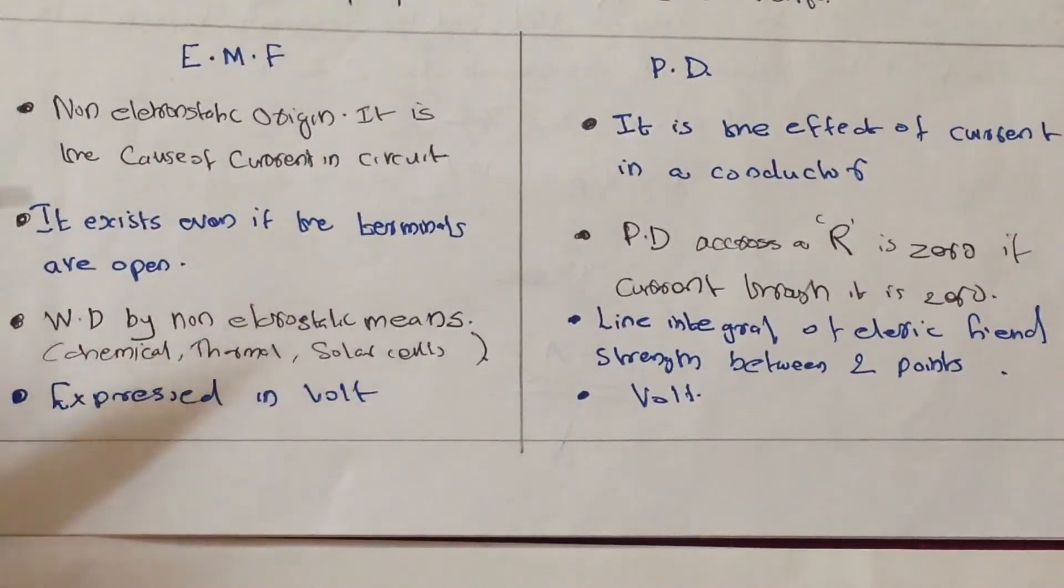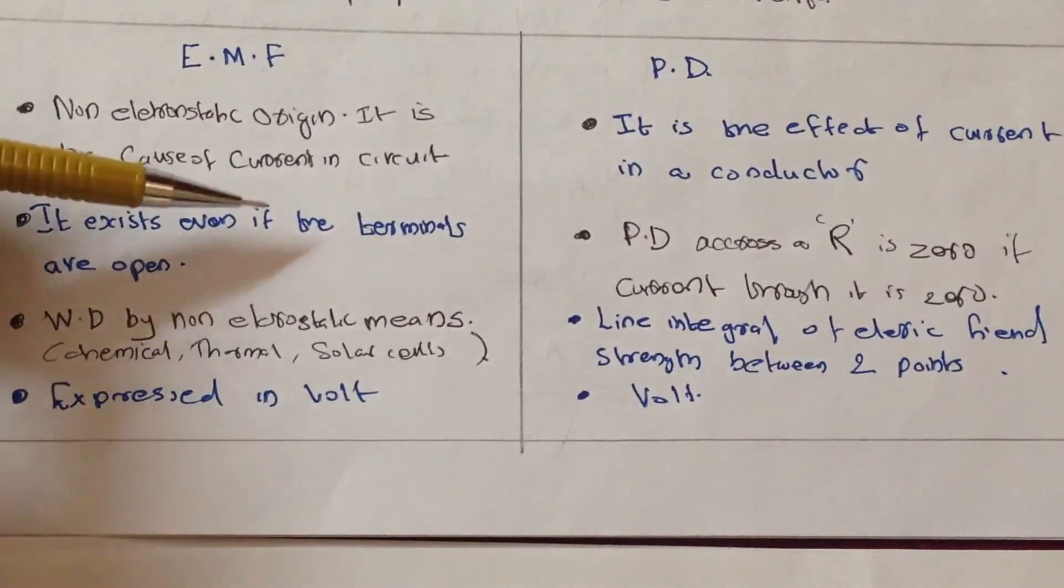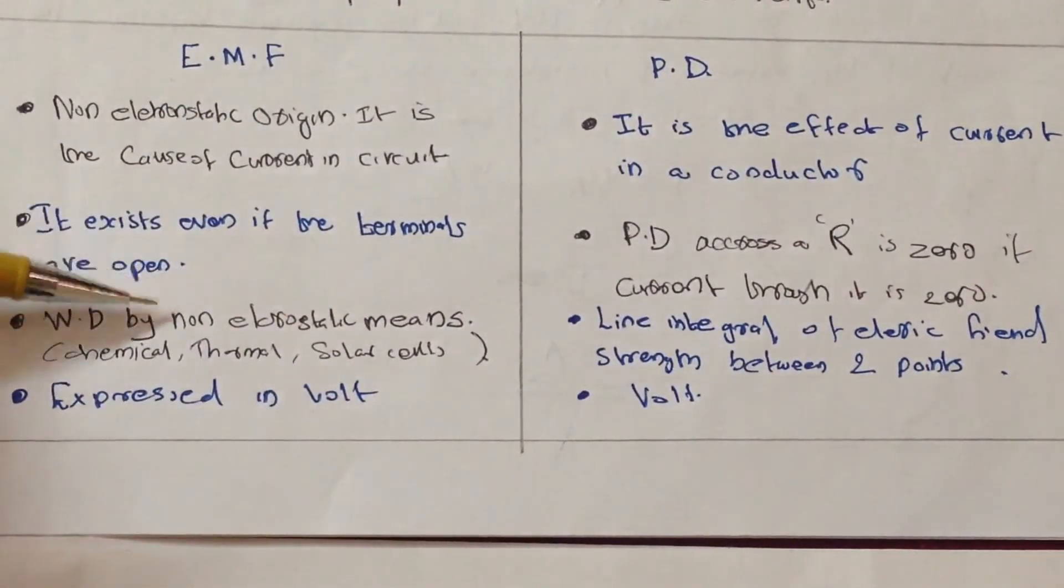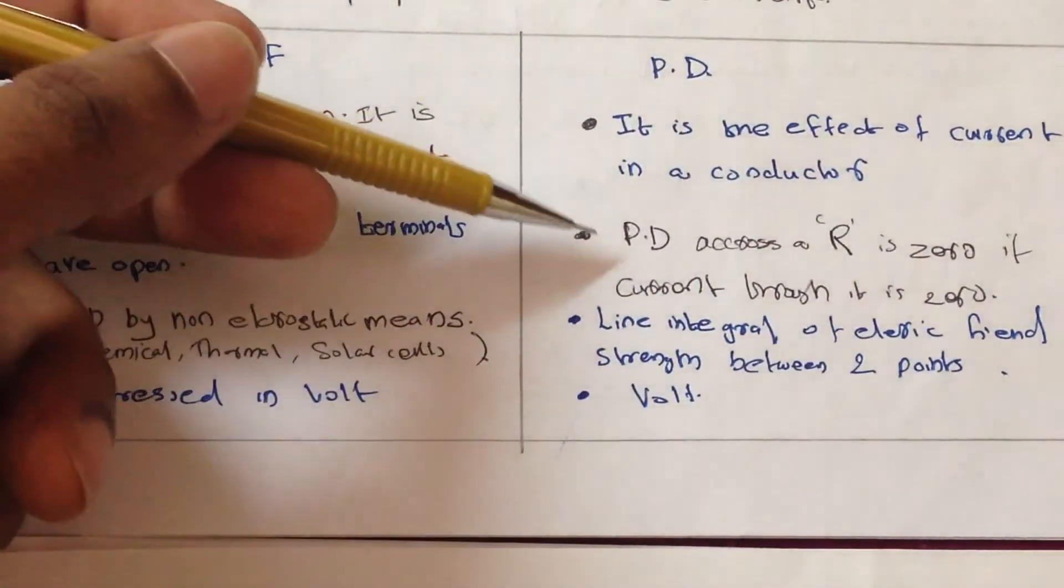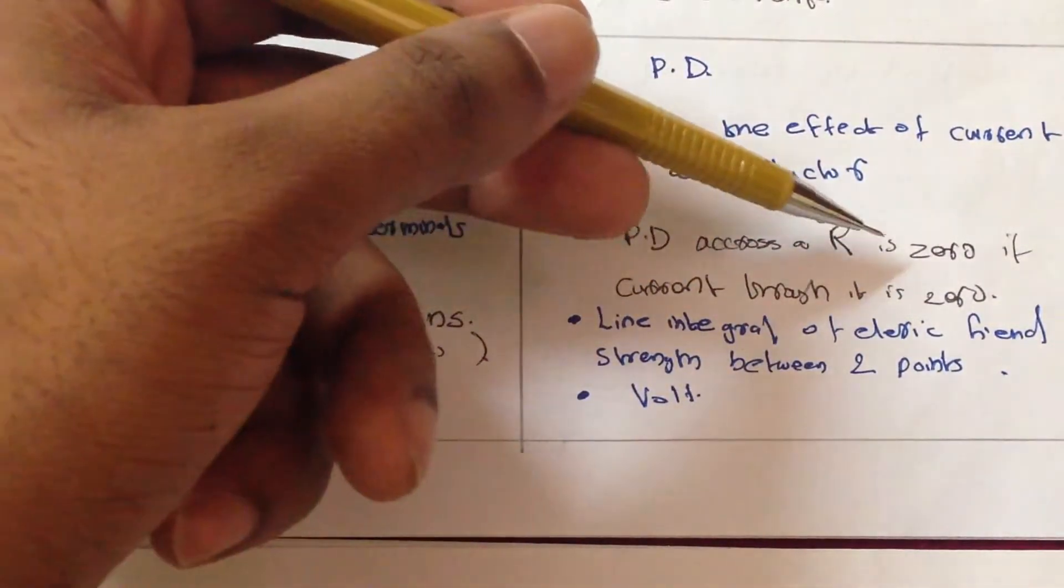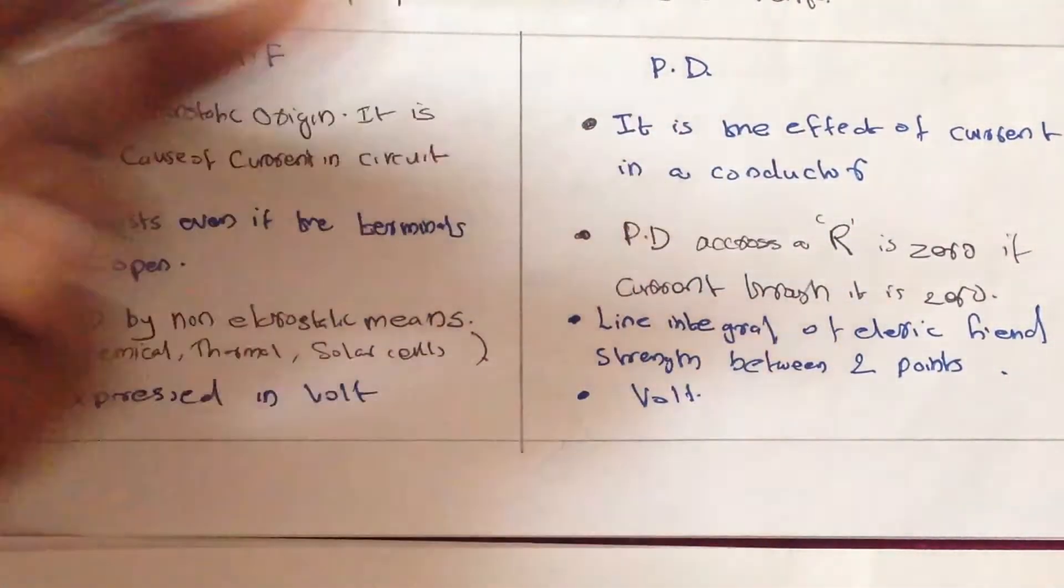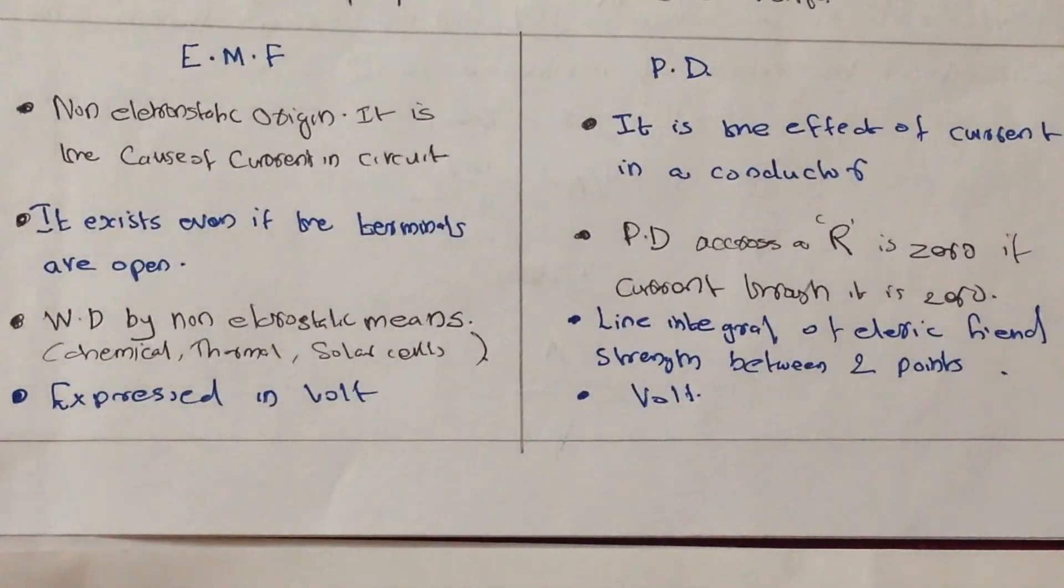But in EMF, it creates the current and it exists even if the terminals are open. If the terminals are open, still EMF exists. Potential difference across R is zero if the current through it is zero. If there is no current, there will be no potential difference. It is caused by the current only, effect of current only. So without current there will be no potential difference.